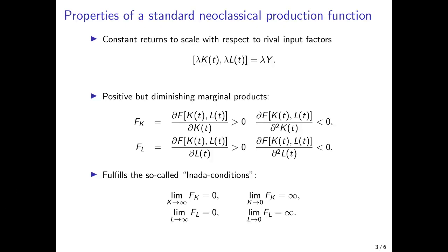This leads to the third property: the Inada conditions. They state that the limit of the partial derivative of the production function with respect to capital or labor goes to zero when employment of that production factor tends to infinity, holding the other factor constant. Intuitively, if you employ ever more capital without expanding your workforce, the additional output tends to zero — adding assembly lines indefinitely without increasing workers will eventually not increase output anymore.